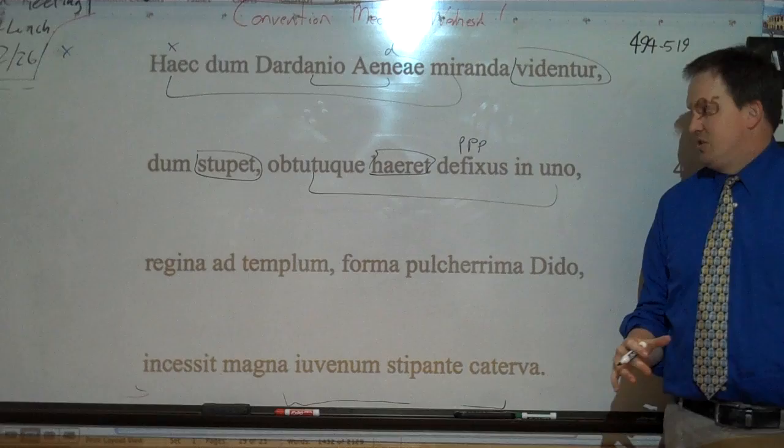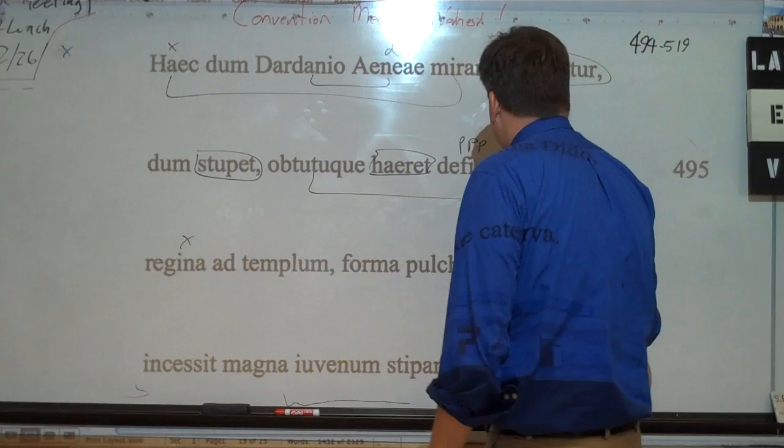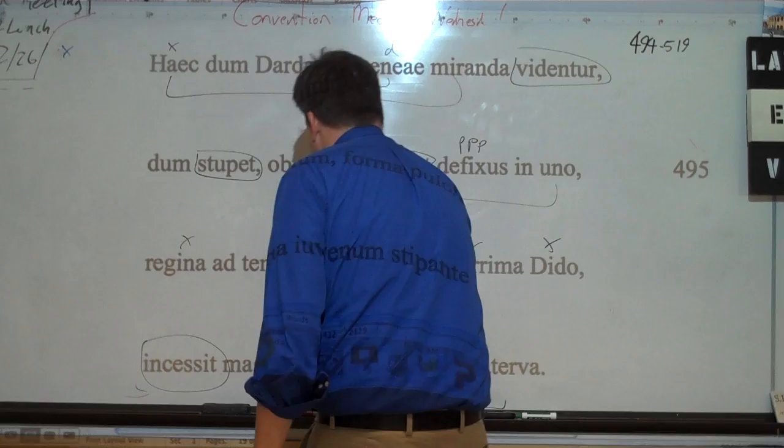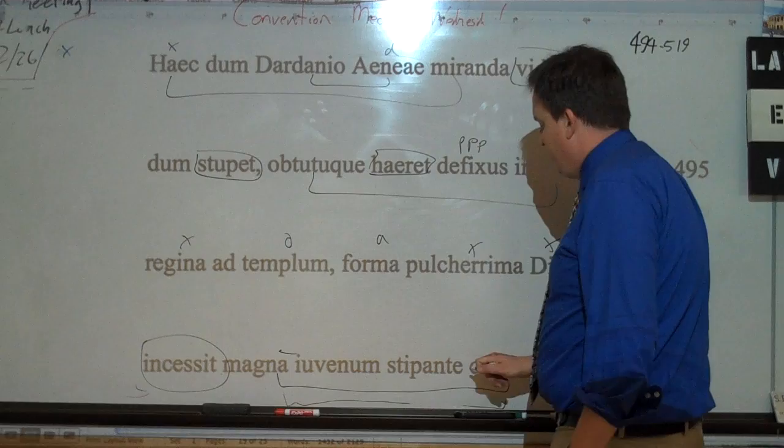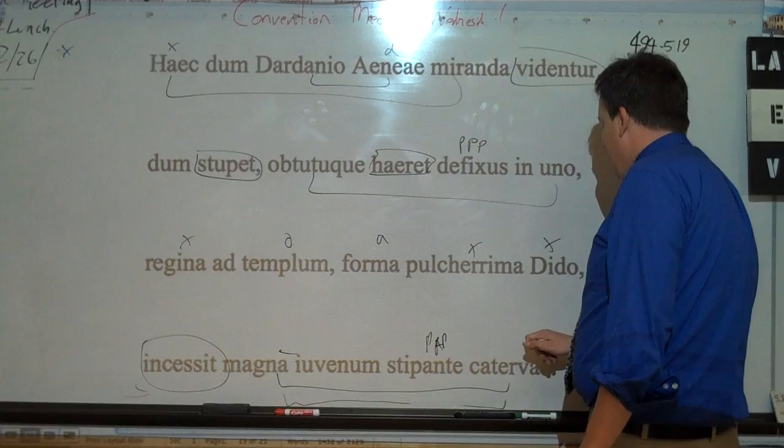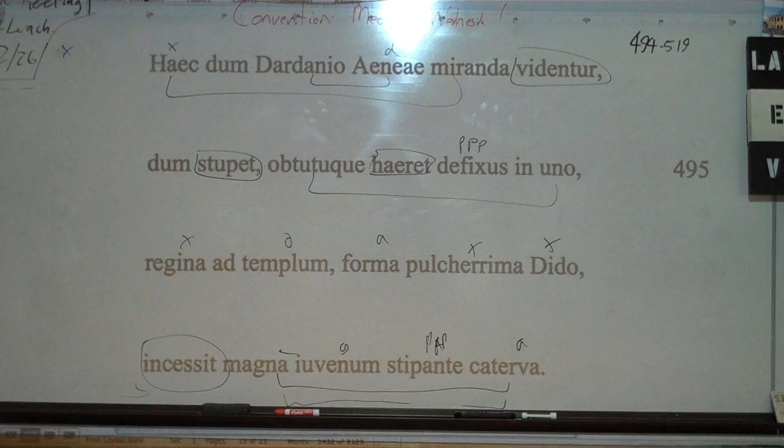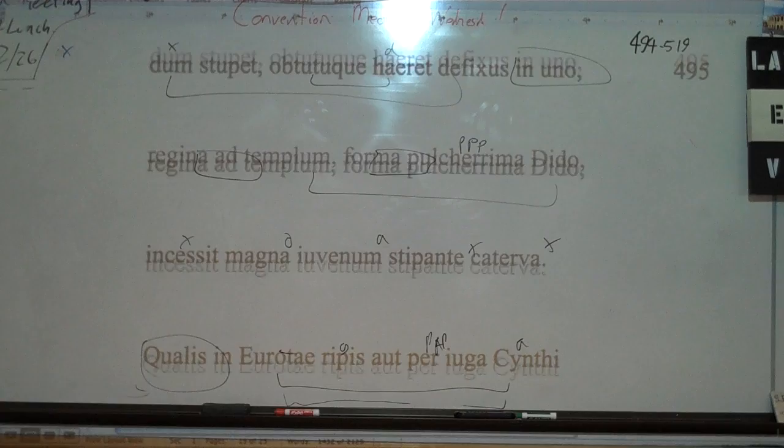While this is all happening, we have the Regina, the Queen Dido, pulcherrima, most beautiful in respect to her form, out of respect. She, incessit, she came to the temple with a great magna caterva, a great crowd, nice ablative of absolute. Now this is a PAP, with a great crowd crowding around, a great crowd of youths. Now Steepo has that nice image of thinking about back to the bee section, all right, where the bees were stipating, and then we have here the great band.